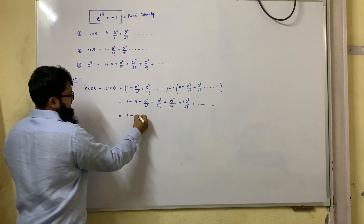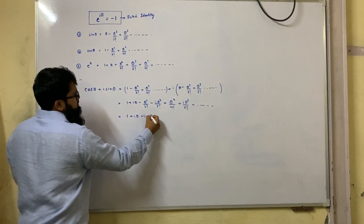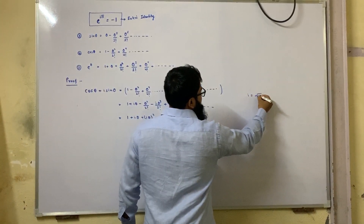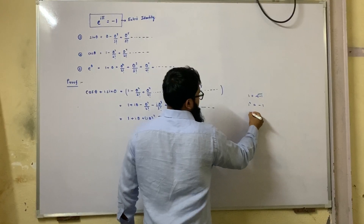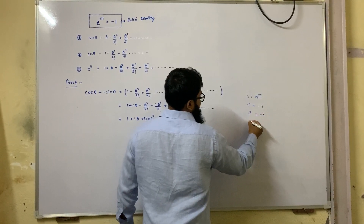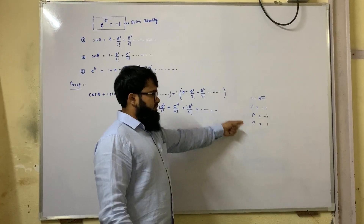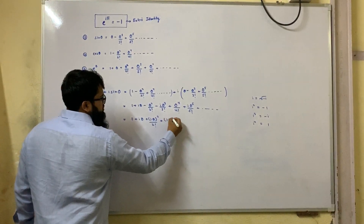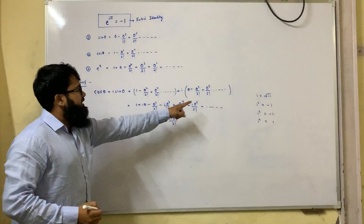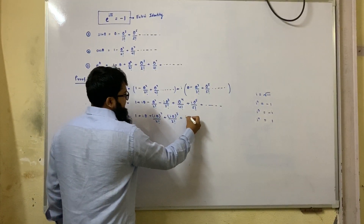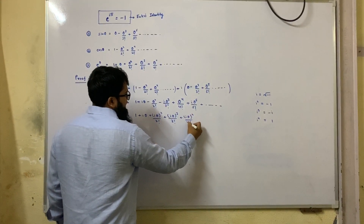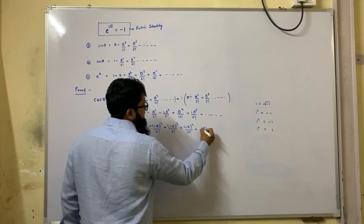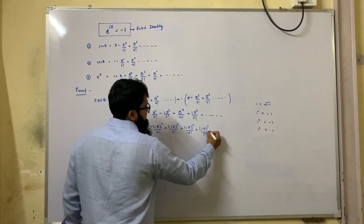You will get 1 plus i theta plus (i theta) whole square by 2 factorial. Why? Because i square is minus 1. What is i? i is the square root of minus 1, i square is minus 1, i cube is minus i, and i raise to 4 is 1. You need to remember the powers of i. So you can write it as i theta cube by 3 factorial — because i cube is minus i — plus i theta raise to 4 by 4 factorial — because i raise to 4 is 1 — plus i theta raise to 5 by 5 factorial, plus dot dot dot.